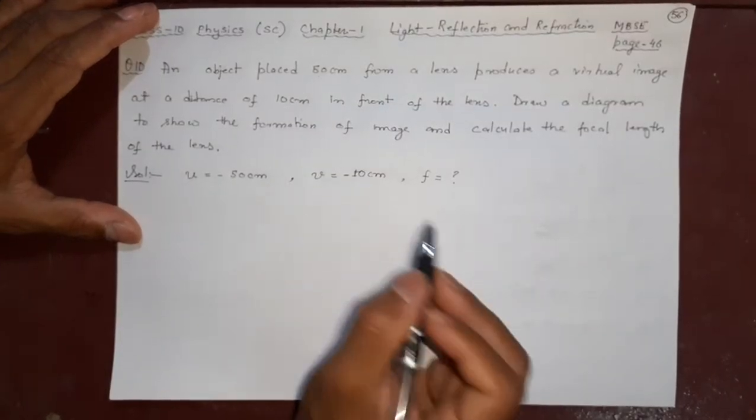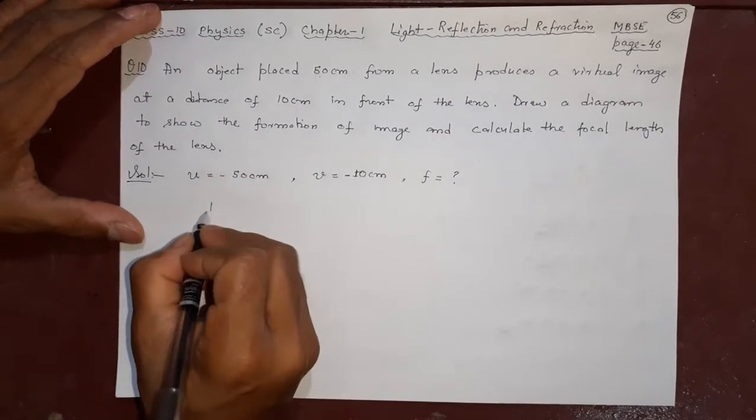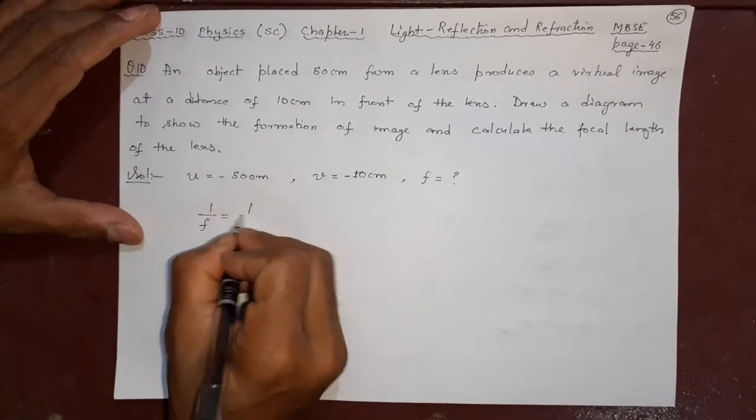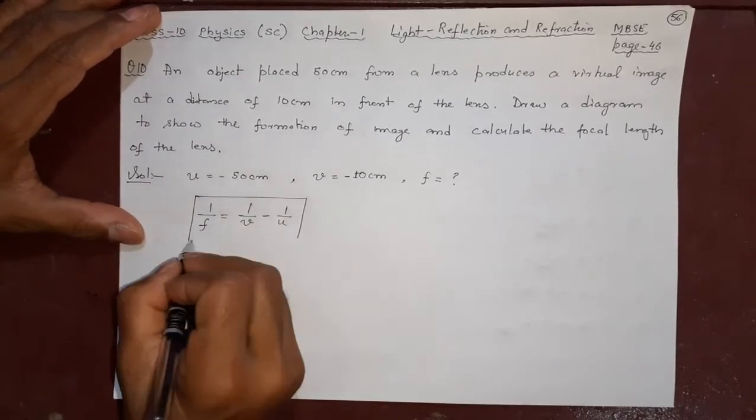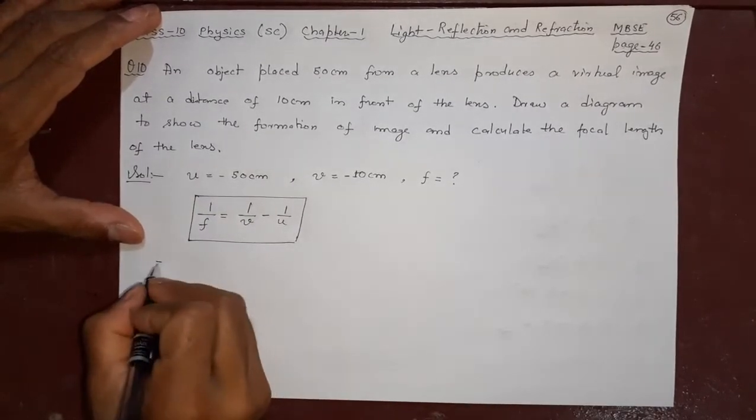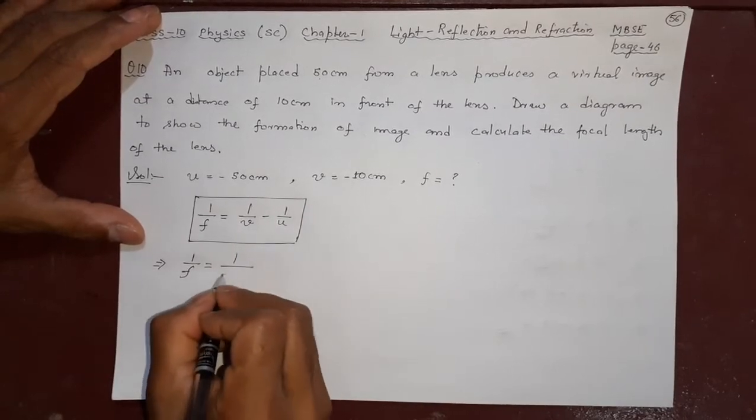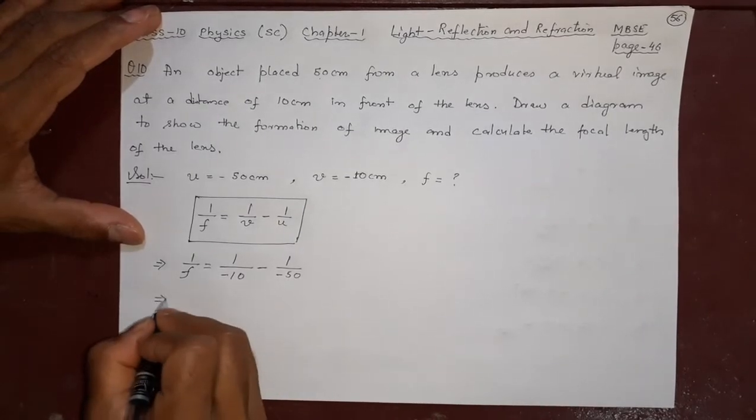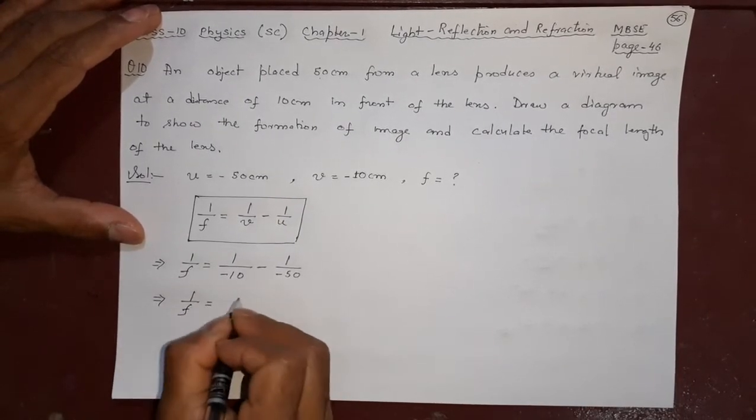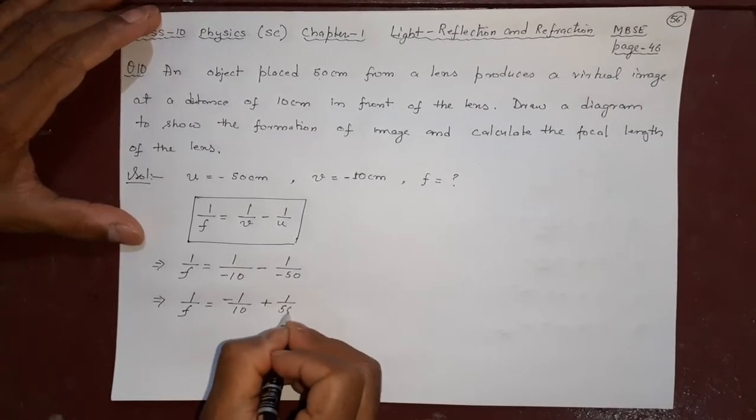In what type of lens is this formed? To know this I will find 1/f = 1/v - 1/u. Let us do this, this is the lens formula: minus 10, 50.